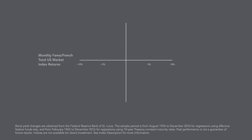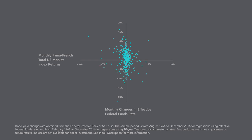This graph plots the equity returns against the monthly changes in the effective federal funds rate from August 1954 to December 2016. As you can see, there is no clear pattern, and a lot of the variation in equity returns was unrelated to interest rate changes.